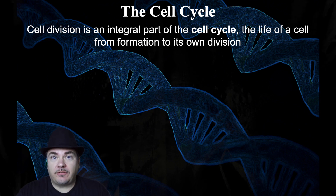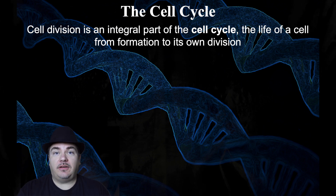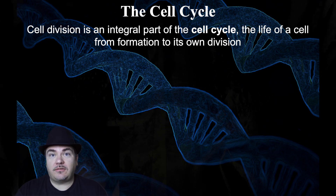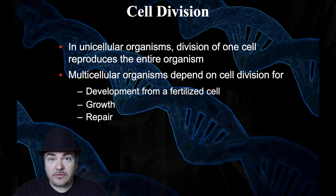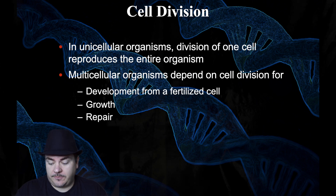Cell division is part of the cell cycle, which I'll describe in detail in a second. Essentially, the cell cycle is from the time you have a newly made cell until the time that cell divides again on its own to become two cells. So what's the purpose of cell division? Well, that depends on what type of cell or organism you are.